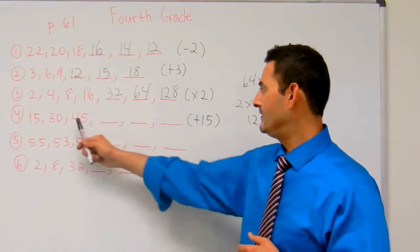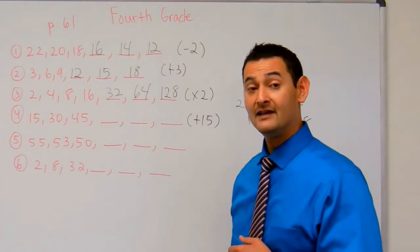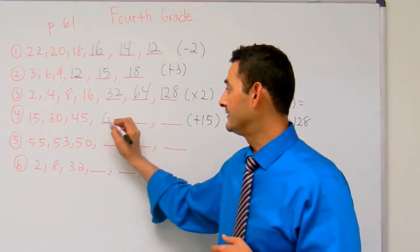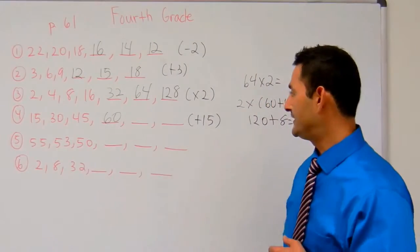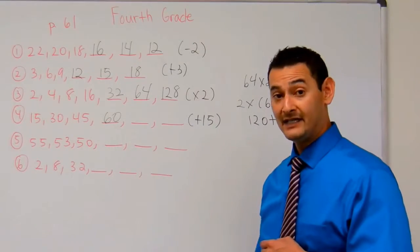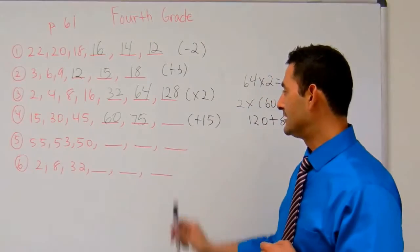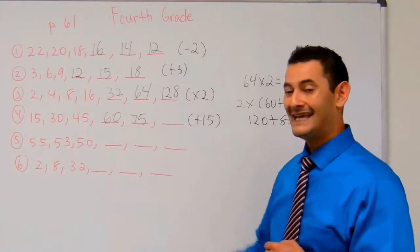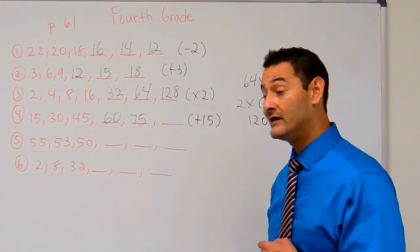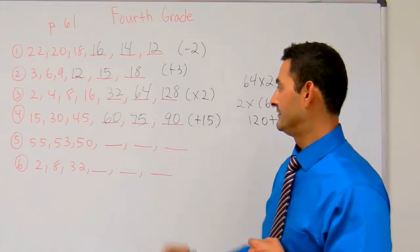So let's just add 15. 45 plus 15, 1 ten, 55. 5 more ones, 60. 60 plus 15, 1 ten, 70 plus 5 more, 75. 75 plus 15, 1 ten, 85 plus 5 more, 90. There you go.